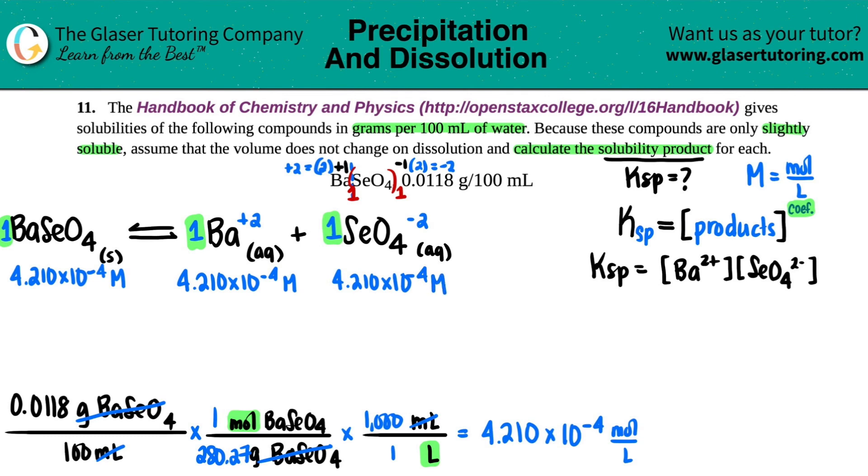And then the same molarity for the SeO4. And now we're going to use these two values to plug in to our Ksp expression. So Ksp equals, it's just the two numbers, no need to raise the coefficients here. So 4.210 times 10 to the negative fourth. And then 4.210 times 10 to the negative fourth. Let's figure it out.